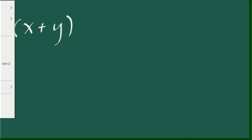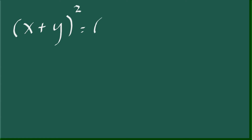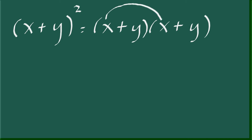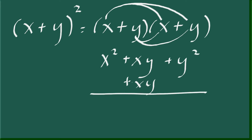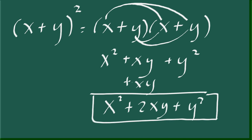The popular method of expanding x plus y raised to some power, say two, is to use the FOIL method or simply distribute the terms. Distribute x to x to get x squared, multiply x by y to get xy, then distribute y to x to get another xy, and distribute y to y to get y squared. Simplify, and we get x squared plus 2xy plus y squared.